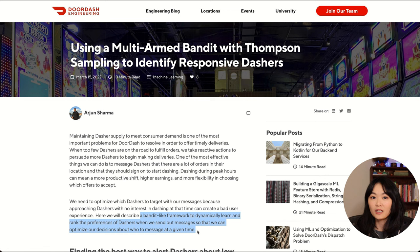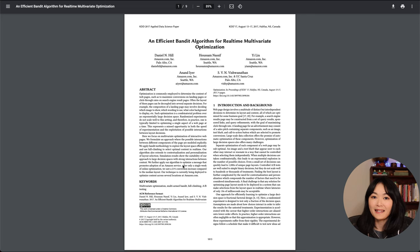Amazon uses Thompson sampling to select the optimal layout of the website and improved conversion by 21% in one week.